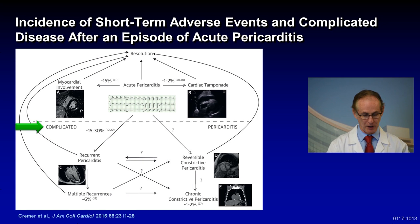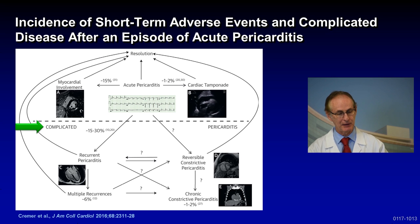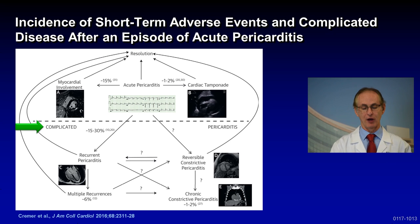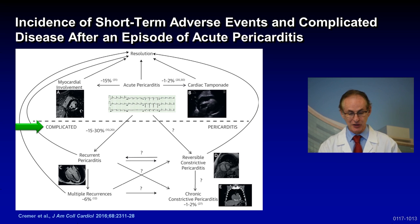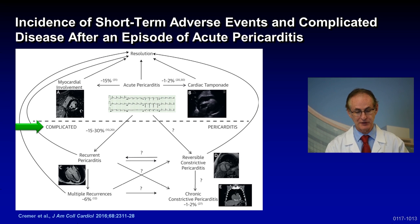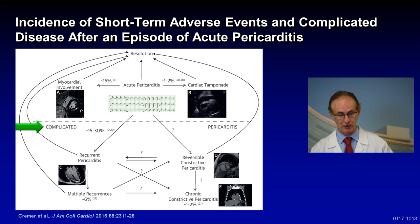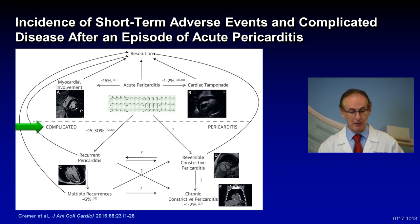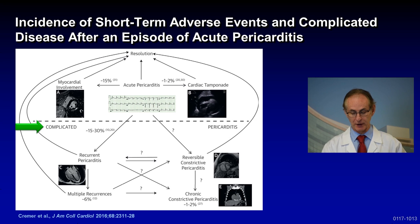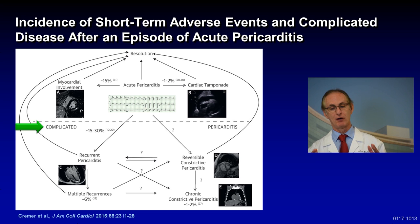In our article by Dr. Kramer, we summarize the incidence of short-term adverse events that complicated the disease after an episode of acute pericarditis. When somebody has acute pericarditis, usually from a viral illness, most of the time it resolves. Occasionally — one to two percent — you can get cardiac tamponade. Fifteen percent can get myocardial involvement with subendocardial scarring on MRI. However, 15 to 30 percent can get complicated pericarditis including recurrent pericarditis, six percent get multiple occurrences, and some get reversible constriction or chronic constrictive pericarditis.